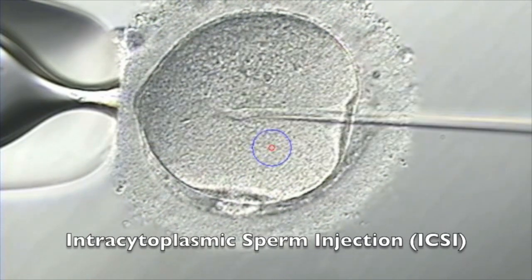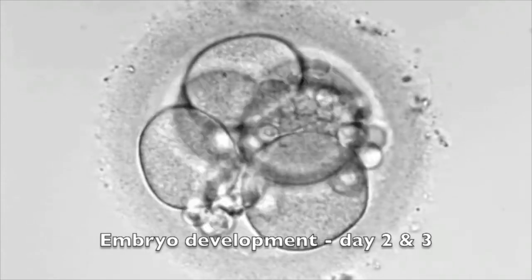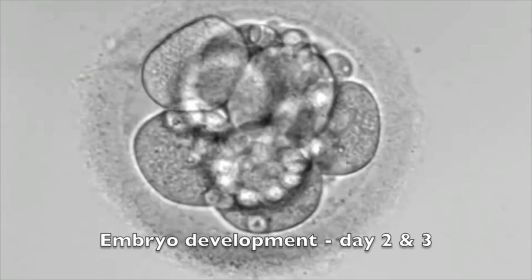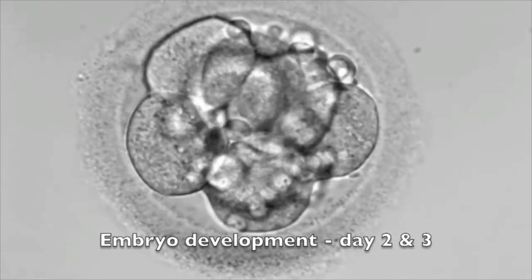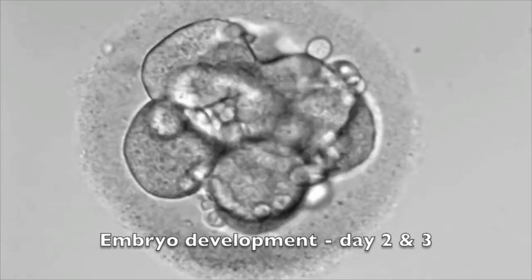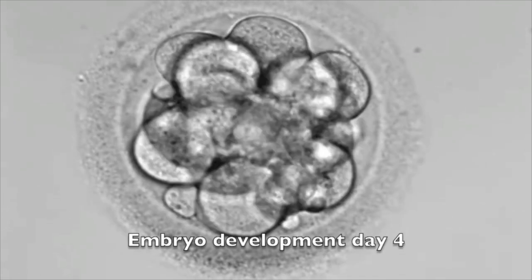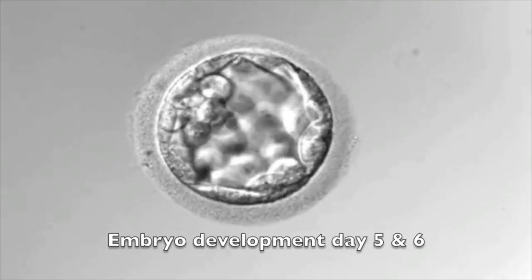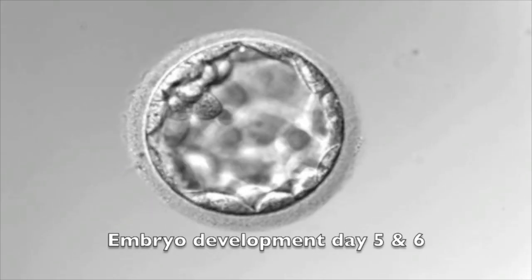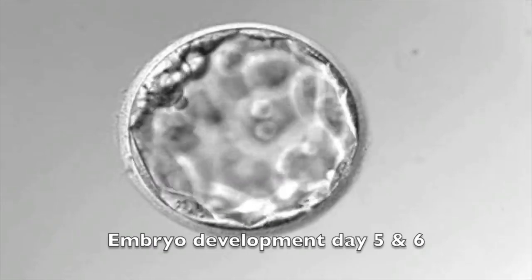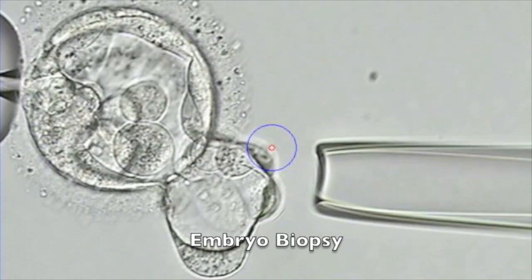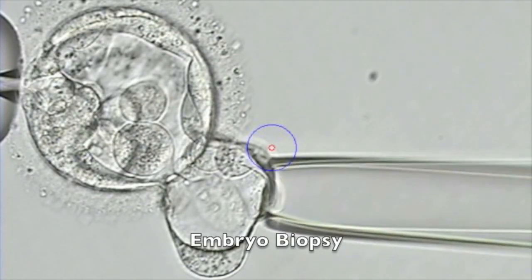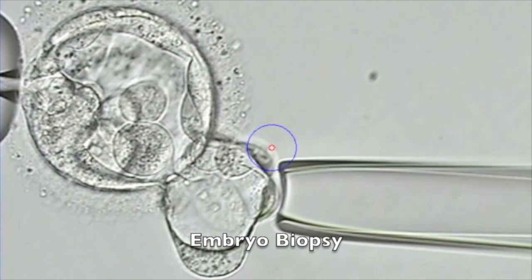Once the egg is fertilized, the embryos will develop for five to six days. Usually, only a minority of the embryos that were created will develop into healthy embryos after five or six days of development. But at this stage, a few cells will be taken from each embryo and frozen.